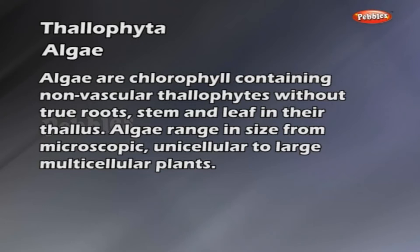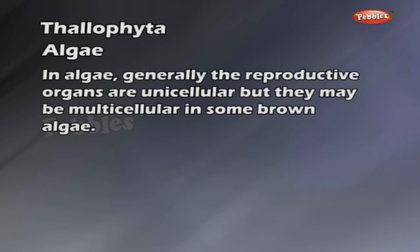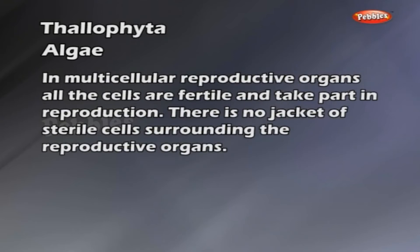Algae range in size from microscopic unicellular to large multicellular plants. Generally, the reproductive organs are unicellular but they may be multicellular in some brown algae. In multicellular reproductive organs, all the cells are fertile and take part in reproduction.